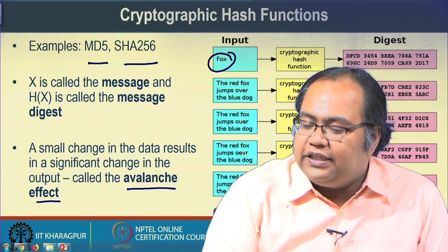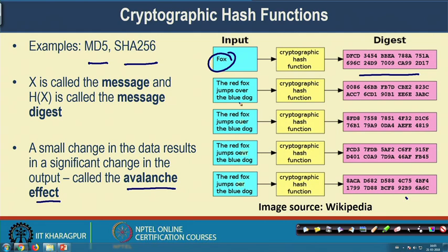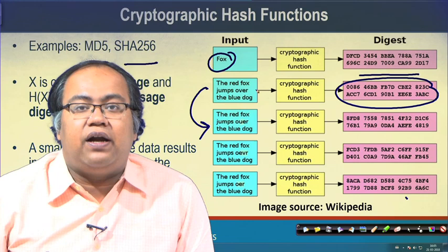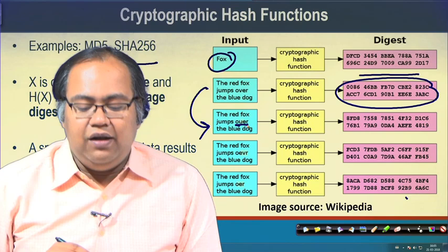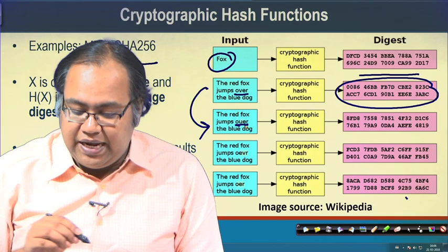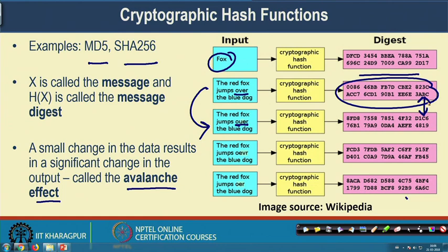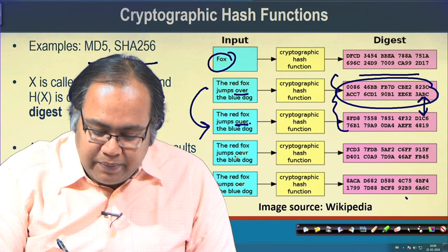For example, whenever the input is 'fox' this is the digest. Whenever you make the input 'the red fox jumps over the blue dog' you get a different digest. Now, if you make a small change — say from 'over' you change it to 'OUER' — you can see that there is a significant change between the message digests. The message digest is completely different, and by looking at this message digest you cannot say that the original input was similar.